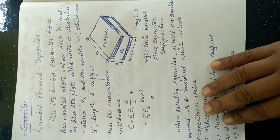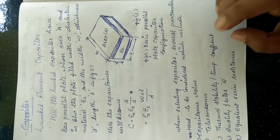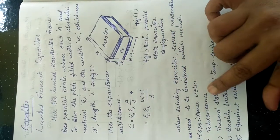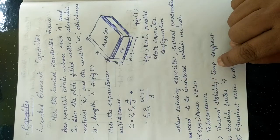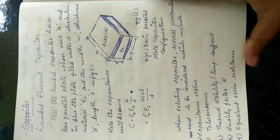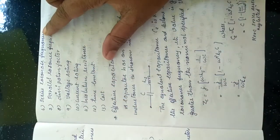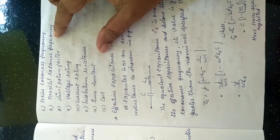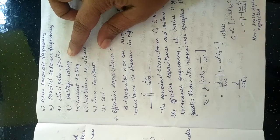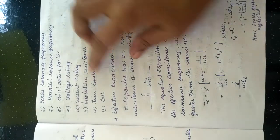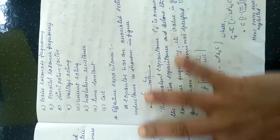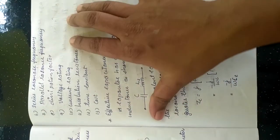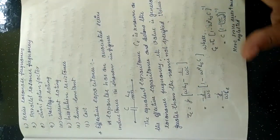Whenever we are going to select a capacitor, there are several parameters we want to consider. These parameters include: capacitance value, tolerance, thermal conductivity or temperature coefficient, quality factor, equivalent series resistance, series resonance frequency, parallel resonance frequency, dissipation factor, voltage rating, current rating, insulation resistance, time constant, and cost.